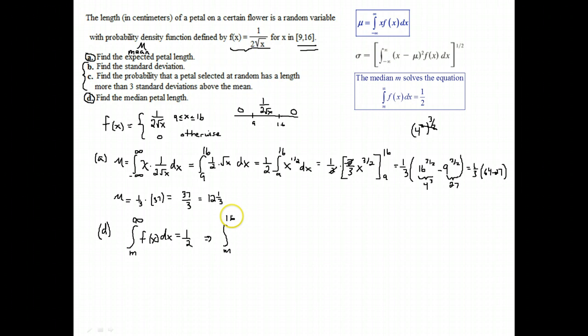Because I don't need to go past 16. Going past 16, the function is 0. So let me pull the half out and call it x to the negative 1 half. So that when I integrate, I get the half, I get x to the half, but then I have to divide by a half. Usually I'll say multiply by 2, but with this half out here, they conveniently cancel.